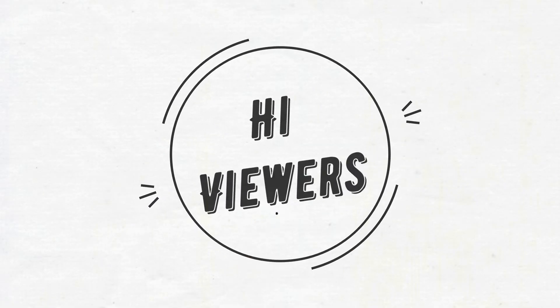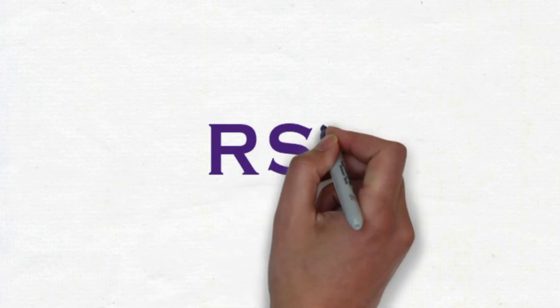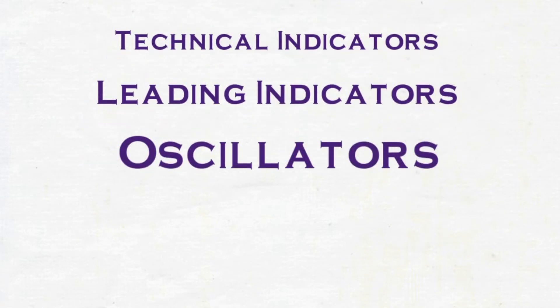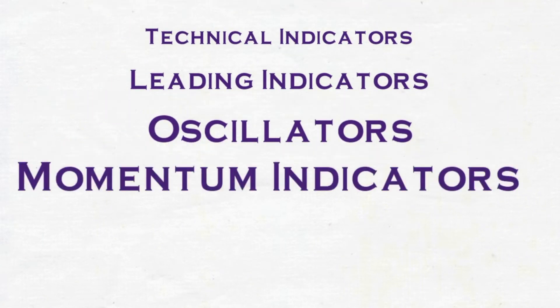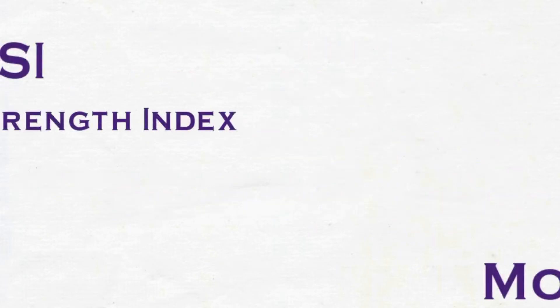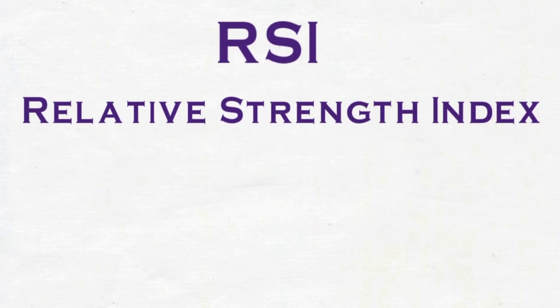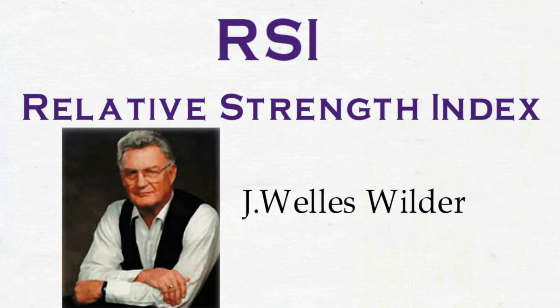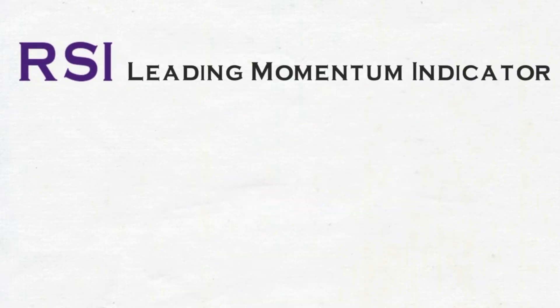In this video we will explain RSI, which means Relative Strength Index. Under technical indicators, RSI is classified under leading indicators and oscillators under momentum indicators. J. Welles Wilder is the founder of RSI. He also founded indicators like ADX. RSI is the leading momentum indicator which measures the speed and change of price.